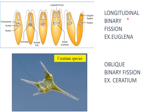Longitudinal binary fission is seen in euglena, based on the plane of division. The nucleus and the cytoplasm divide along the longitudinal axis of the organism, giving rise to two new euglena. The basal granule also divides into two, forming two different daughter individuals.